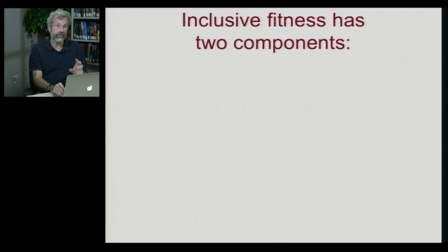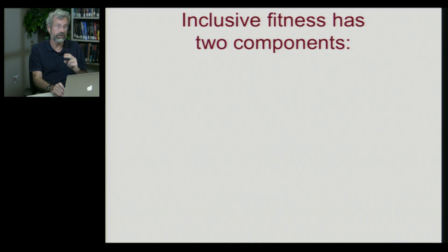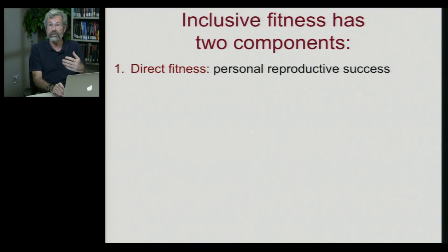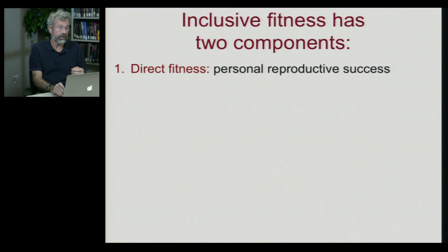Inclusive fitness is an expansion of the original idea from Darwin, and it has two components. First is direct fitness — personal reproductive success. That's what we've been measuring when we looked at heterozygote advantage and selection on one genotype over another. This is Darwinian fitness from parent to offspring.